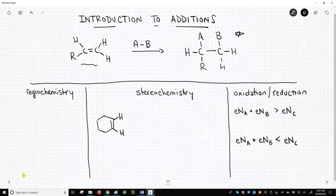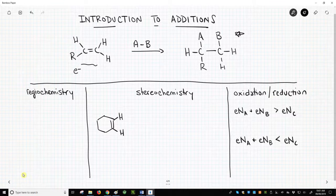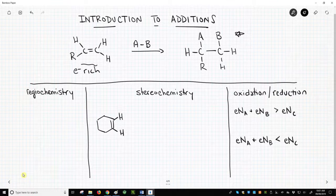Normally with additions of alkenes, the carbon-carbon pi bond is a source of electron density. It is electron-rich. Therefore, the alkene is considered a weak nucleophile.